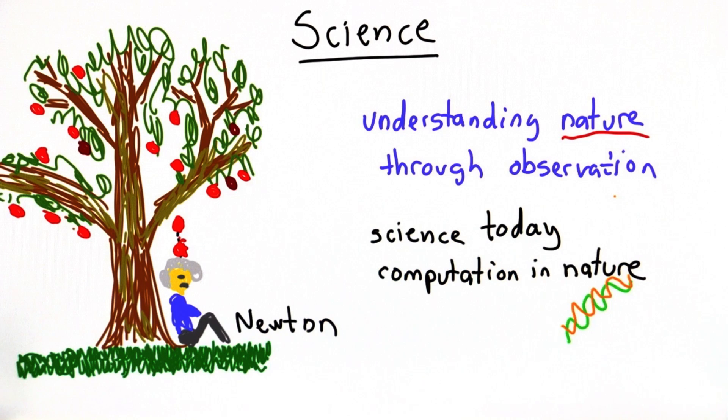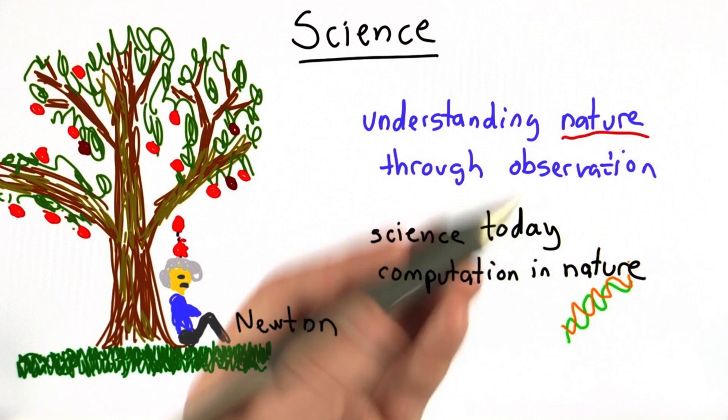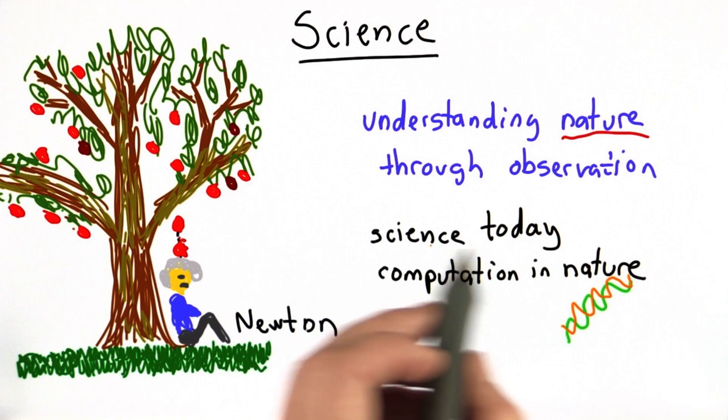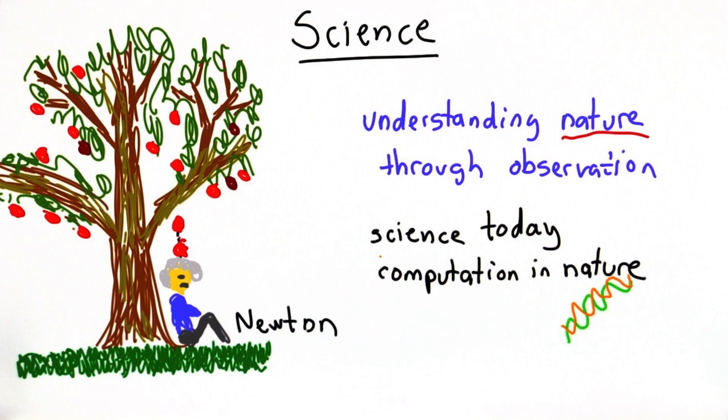So certainly if we want to understand nature better, both how human minds work, well that's largely about computation, and how DNA produces biological organisms, and how DNA evolves over time, that's really about understanding computation in nature.